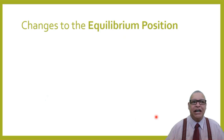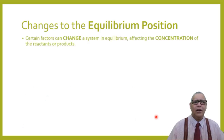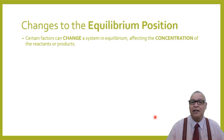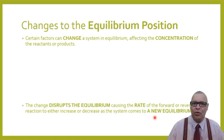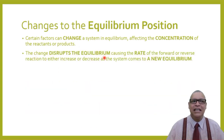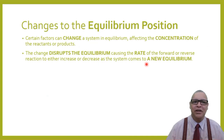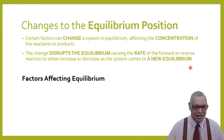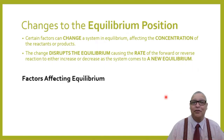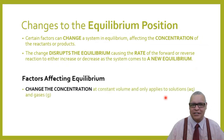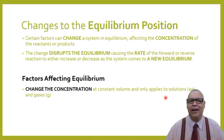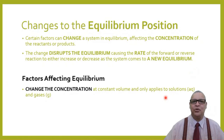Certain factors can change a system in equilibrium — they affect the concentration of the reactants or products. The change disrupts the equilibrium, causing the rate of the forward or reverse reaction to increase or decrease as the system establishes a new equilibrium. There are three main factors. Firstly, changes to the concentration at constant volume — this only applies to aqueous solutions and gases.